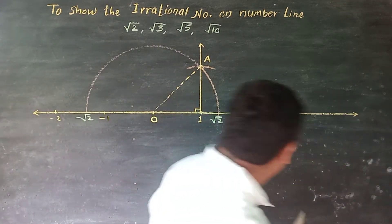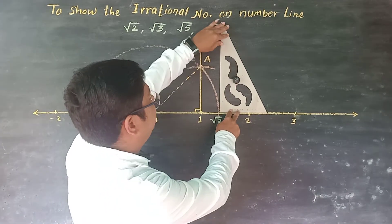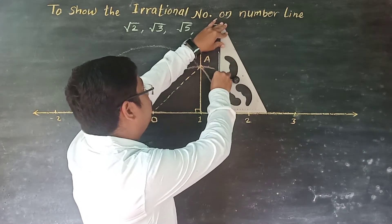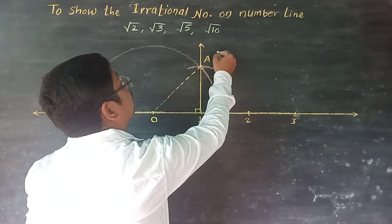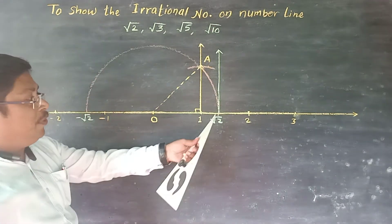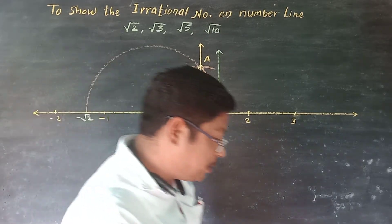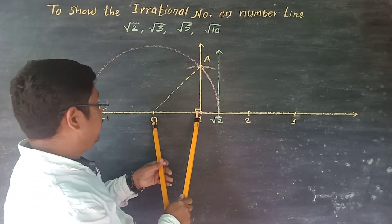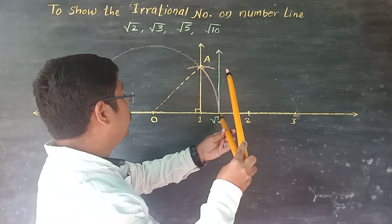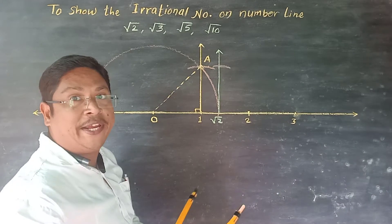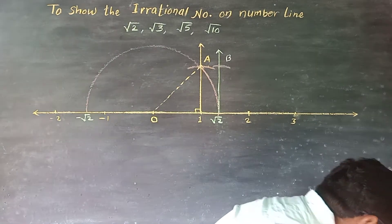For root 2 once again, draw perpendicular. From zero to positive one, this is the unit distance. We get the point B. From zero to positive one.